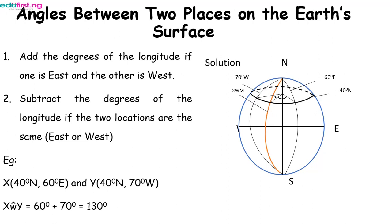Let's look at an example. Location X has 40 degree north and 60 degree east, and location Y has 40 degree north and 70 degree west. Draw a circle, place the four cardinal points, draw the Greenwich meridian, then place all values. 40 degree north is latitude, 60 degree east is longitude drawn towards east. For Y, 40 degree north is already drawn; 70 degree west is longitude drawn to the west. Since the longitudes are 60 degree east and 70 degree west — east and west are not the same — you add them: 60 plus 70 equals 130 degrees, which you use as your angle.